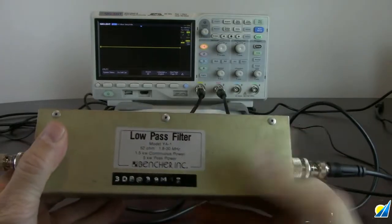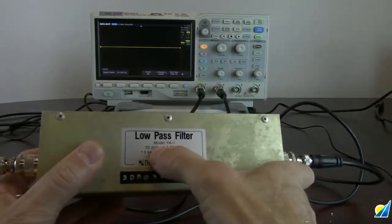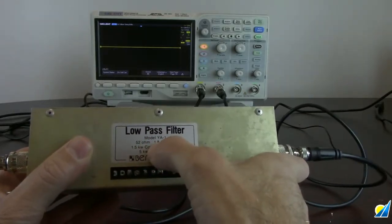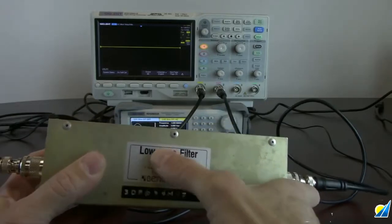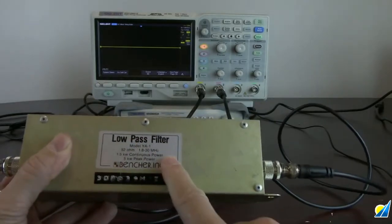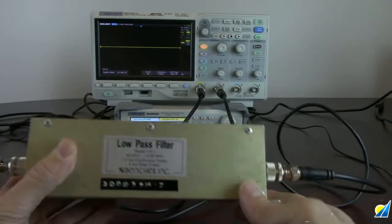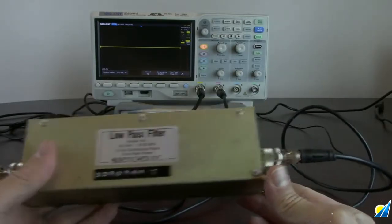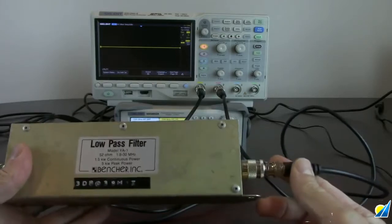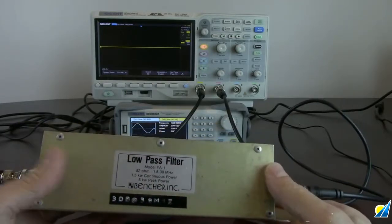In this case we're going to take a look at this low pass filter. It's a 50 ohm filter that operates from 1.8 megahertz to 30 megahertz. It's a low pass filter so we expect it to pass everything below 30 megahertz, but as we get closer to 30 megahertz we'll start to attenuate the signal so the amount of signal coming out of the output will decrease as we get higher and higher in frequency.